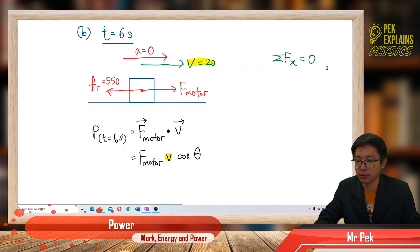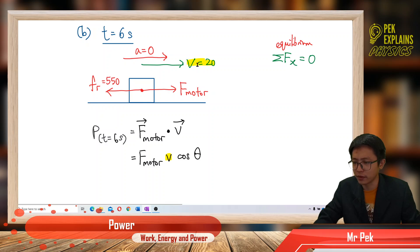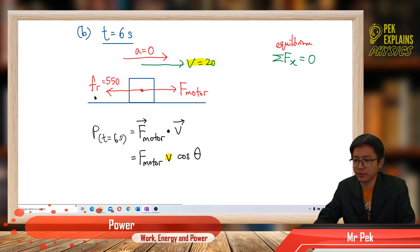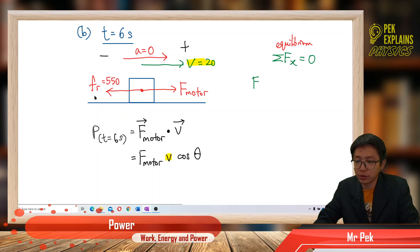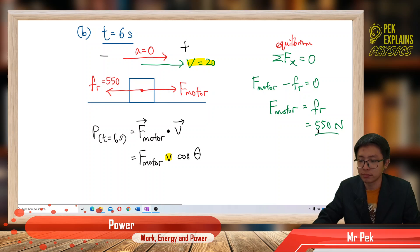We use Newton's first law because there is no acceleration. Acceleration is 0, meaning equilibrium — no resultant force. So force to the right equals force to the left: F_motor positive and friction negative, sum equals 0. Therefore force of the motor equals friction, which is 550 newtons. No acceleration means no resultant force, so the motor force equals the friction force.